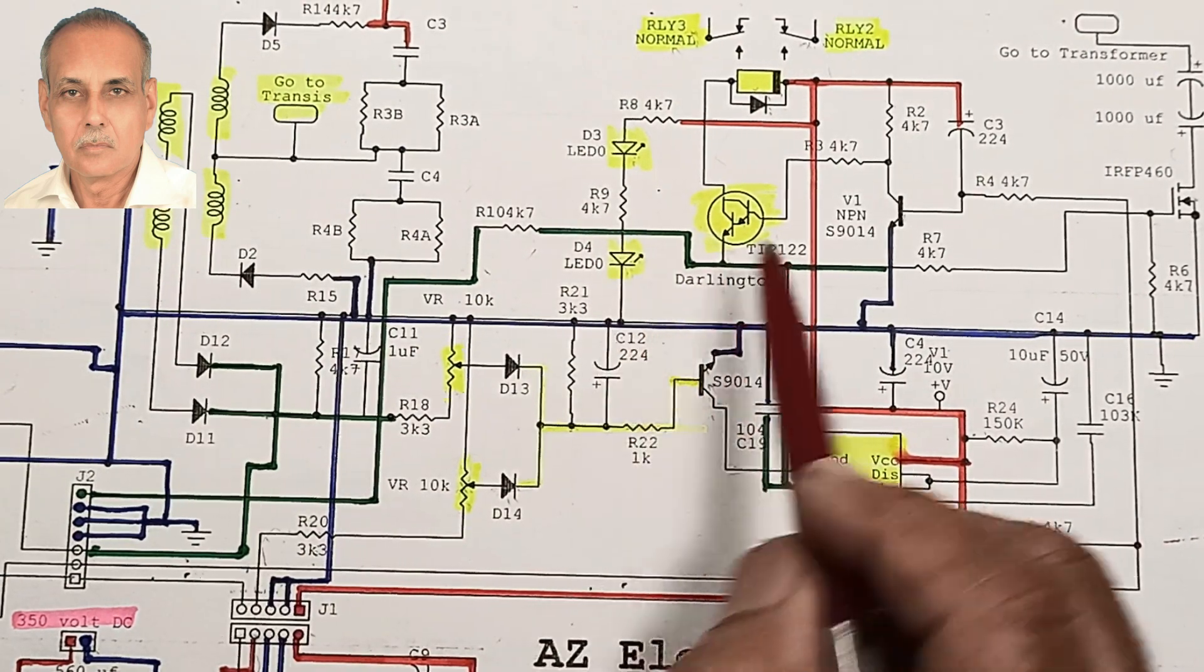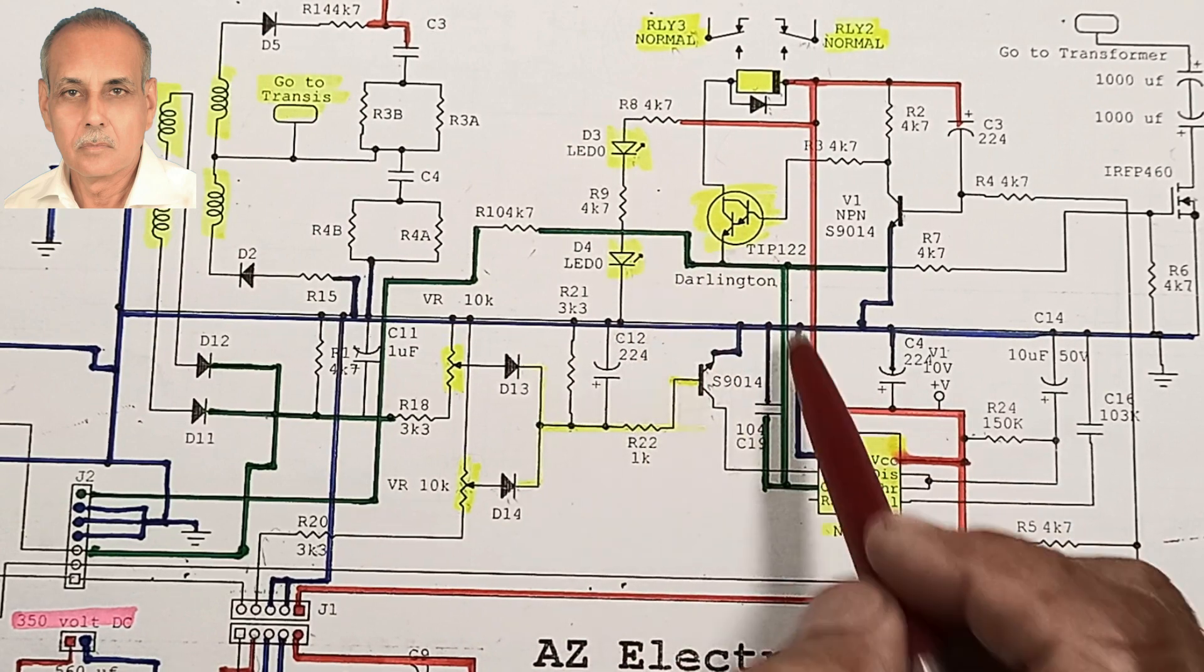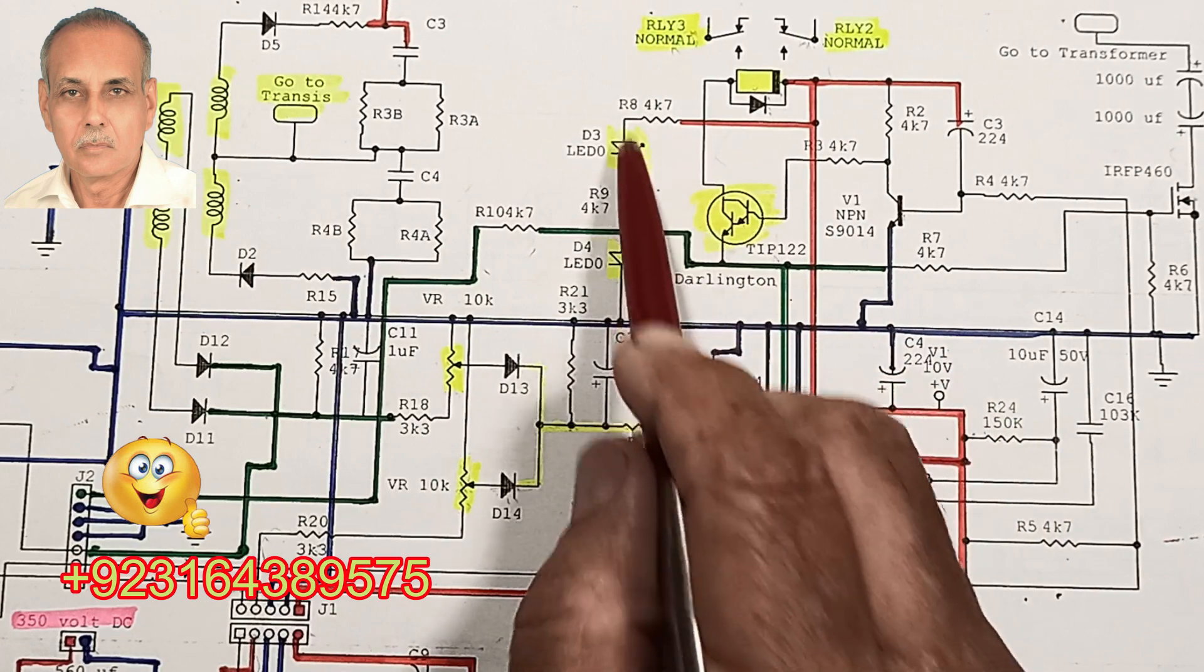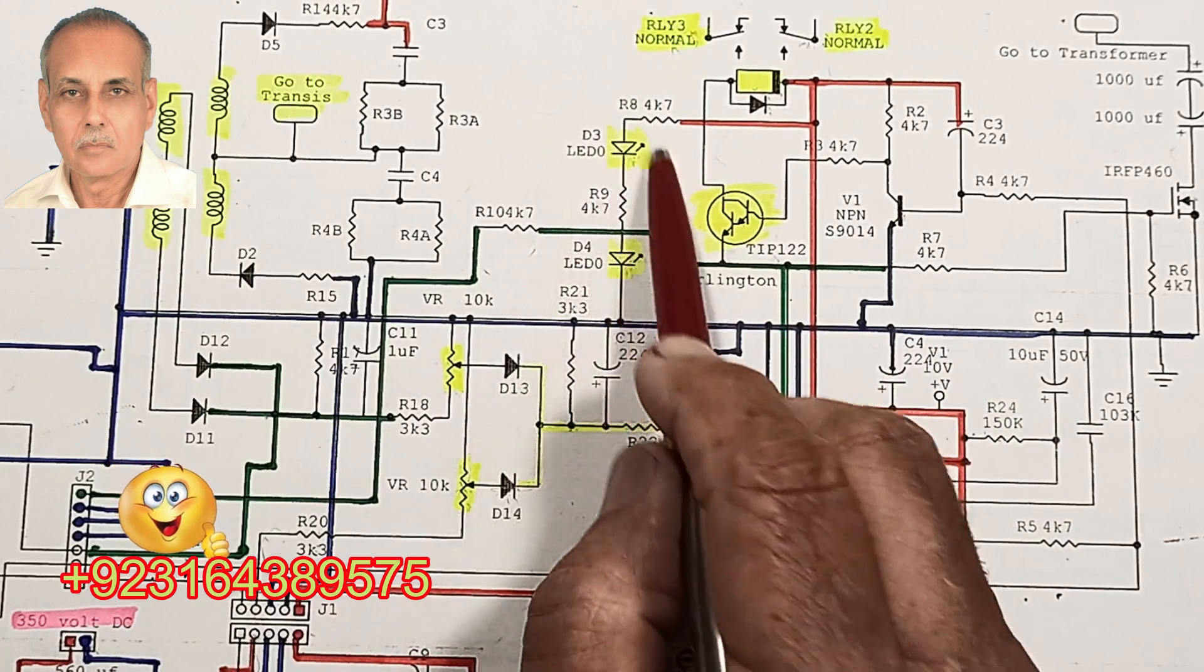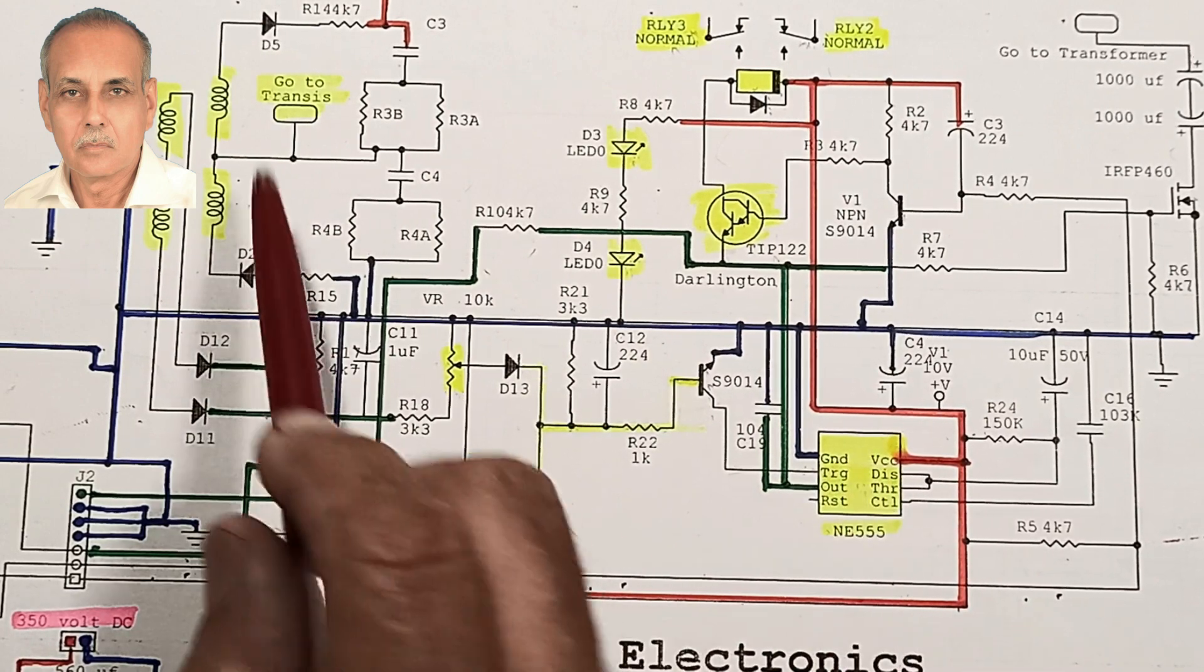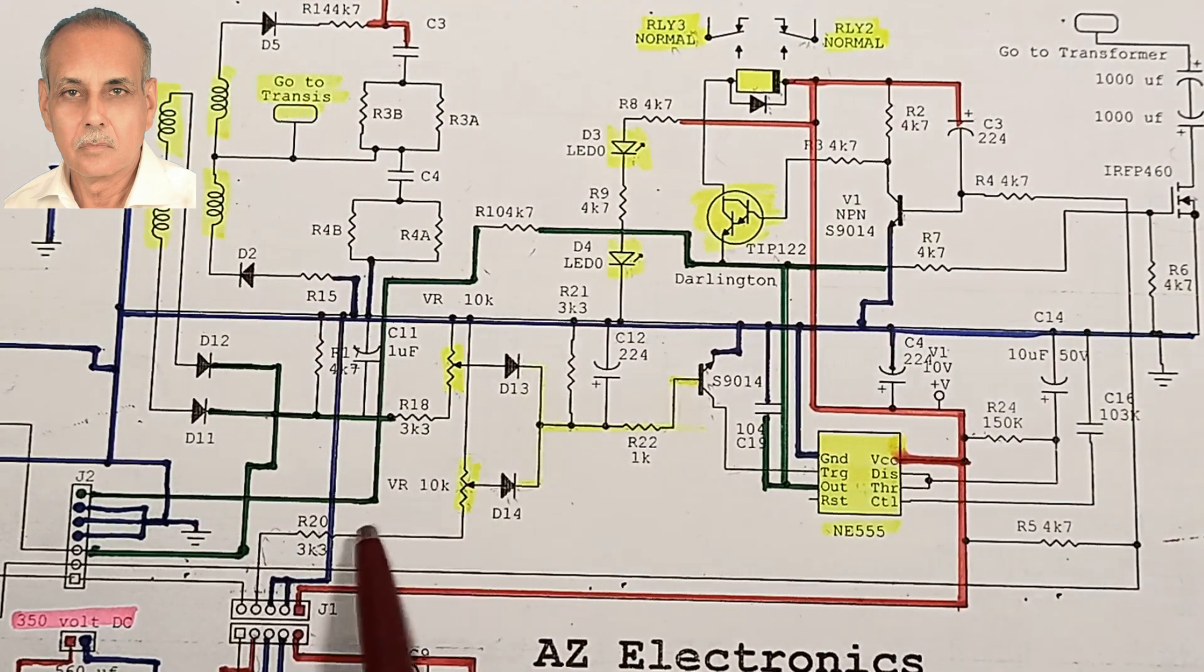Coming from pin number 3, which is the output pin, connected to the cathode of the red LED which is grounded here. So the situation is that as long as the negative is present on this pin, then the positive coming from the top turns on the green LED. As soon as 555 IC is triggered, the signal changes.